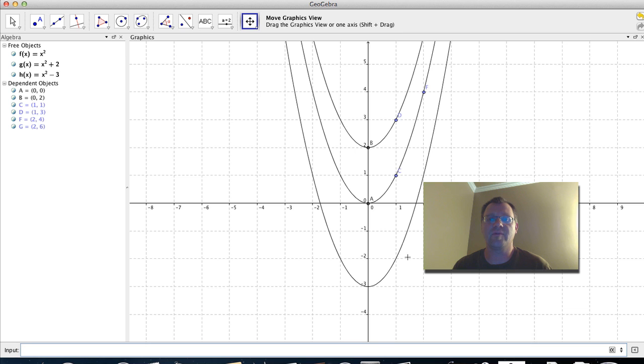So we call that a vertical translation, or sometimes called a vertical shift. If you add a number to your function, the graph is shifted upwards. If you subtract a number to your function, the graph is shifted downwards.